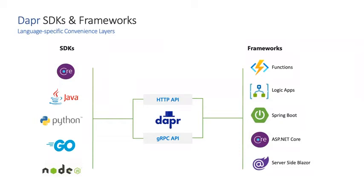You might be saying 'have we not moved past raw URLs and gRPC endpoints?' You can always use the raw API, and in some languages like Node.js it's a first-class citizen. But we also provide five SDKs that the Dapr project manages — and the community manages others including Rust, C++, and more. If one is missing please contribute! They give you access to the same API. There's also integration into frameworks: Azure Functions can run regardless of whether you're on AKS or another cluster, and you can integrate with Logic Apps, Spring Boot, ASP.NET Core, and others.